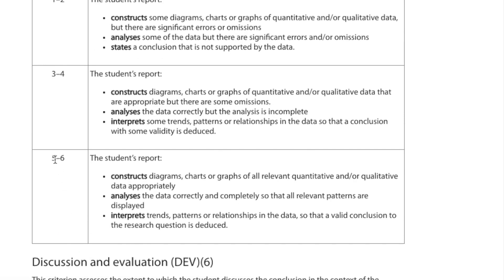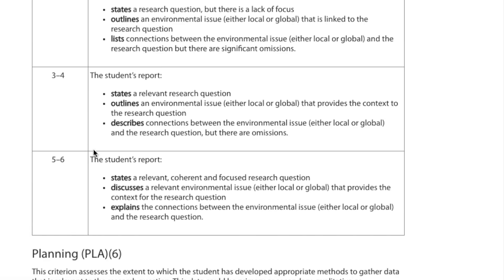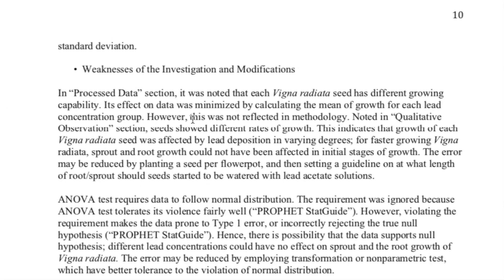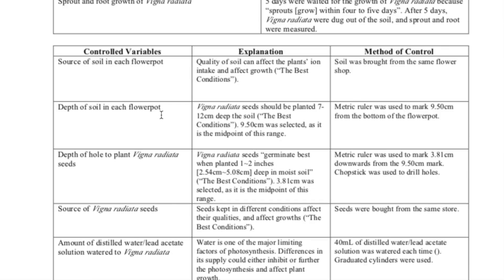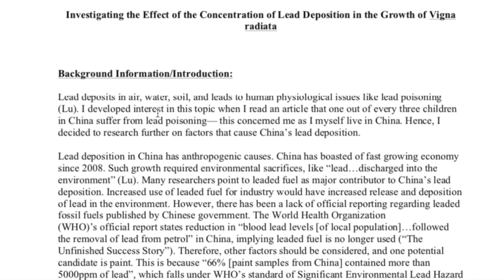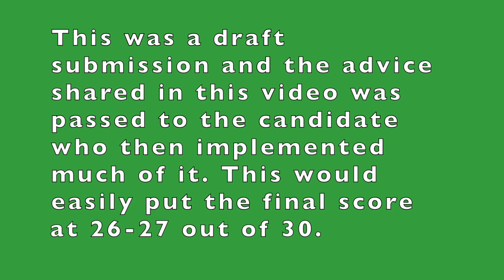Adding it up: three plus two is five, plus four is nine, plus five is fourteen, plus five is nineteen, plus another five is twenty-four. That gives this report a score of 24, which is in the seven mark band for ESS IAs. The candidate who wrote this exam several years ago did in fact score a seven — and also scored a six in HL Biology and a six in HL Chemistry, going on to score 41 in the IB Diploma. But again, I want to caution you: this IA is not to be used as-is to submit to your teacher, as it would constitute academic dishonesty and your IB Diploma could be revoked.